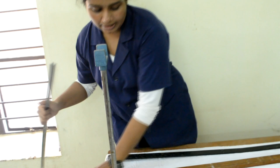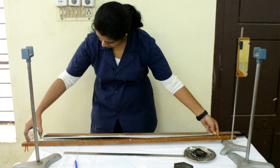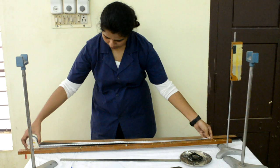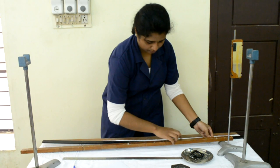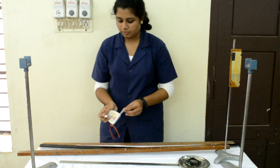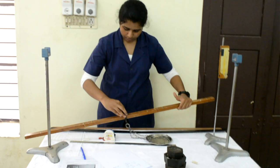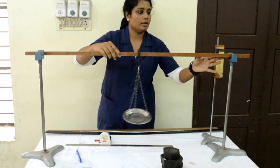After that we have to fix the span of the beam. Let us take the span to be 1 meter. Mark the midpoint as well. After that, insert the loading pan at the midpoint. It has a pointer and keep the wooden beam. Make sure that the 1 meter is measured from the center of the supports.